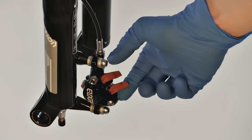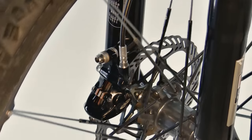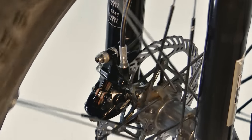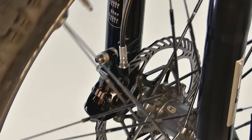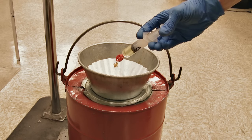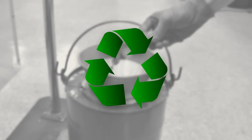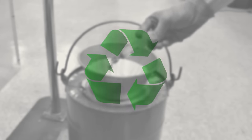Remove the bleed block from the caliper and reinstall the brake pads. Reinstall your wheel according to the manufacturer's instructions. Empty the syringes into a sealed container and dispose of the fluid properly. Used brake fluid should be recycled or disposed of in accordance with local and federal regulations.